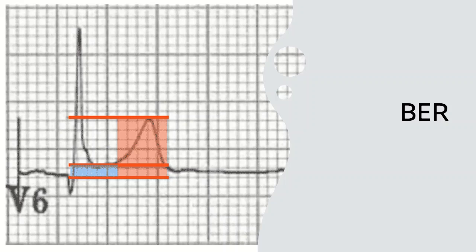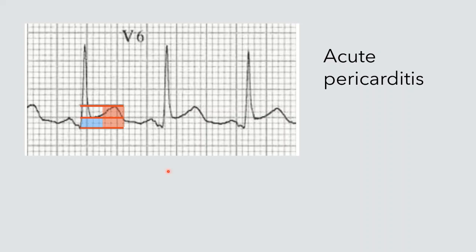So here look at this, in acute pericarditis the ratio is more than 0.25. In this slide, in the previous slide, what we saw was this T wave amplitude is longer, lengthier, that makes the ratio more smaller which favors benign early repolarization on the contrary to this.